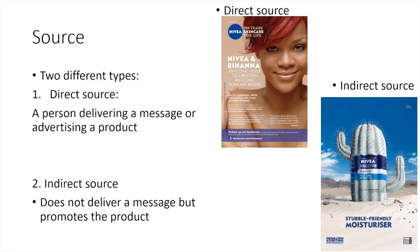Let's have a look at sources. There are two different types. Firstly, you get your direct source — a person who's delivering a message or advertising a product. For example, Rihanna being included in a Nivea ad — she's the face of the campaign, delivering the message and selling the product. Then we get an indirect source, which does not deliver a message but still promotes the product — for example, a plain and simple advert just advertising the Nivea Men's range.